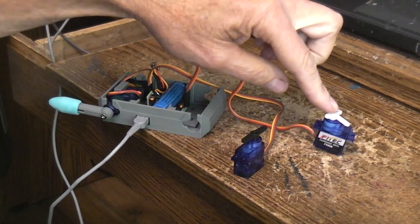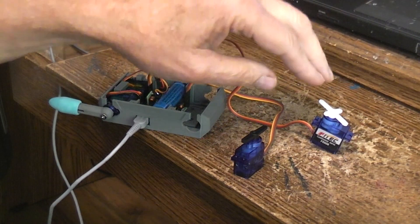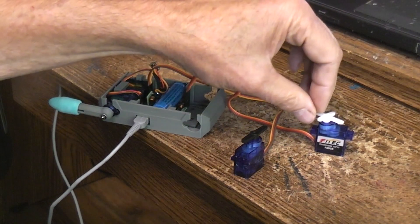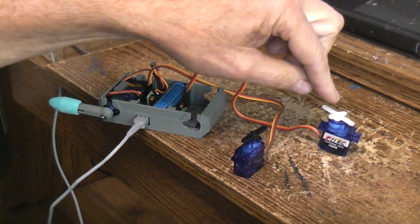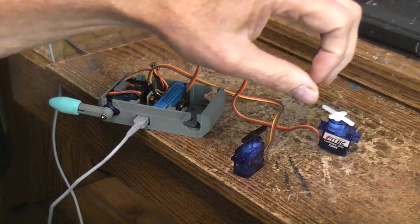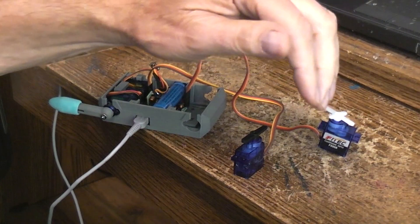This one over here is sold as a 360 degree servo. You can't position control these types of servos. Basically what you can control is the direction that it rotates and the speed that it rotates, but you can't tell it to go to a particular position.